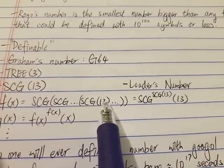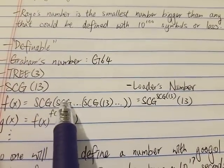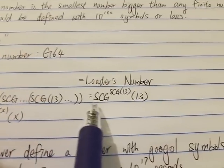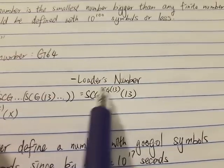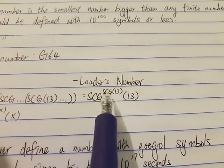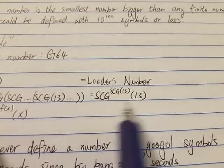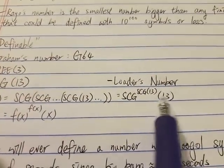And there are in total SCG(13) number of SCG functions. So in other words, it could be written as SCG, where this means the function SCG iterated for SCG(13) number of times. So you could define fx as this absurdly large number.